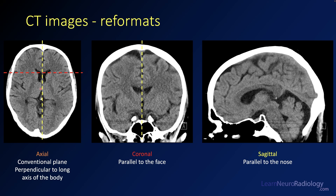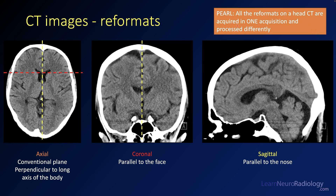The sagittal plane, shown by the yellow dashed line, is like cutting down the middle — parallel to the nose. In the sagittal image you can see the corpus callosum and the ventricles. Each plane has its relative strengths and can give you different information. On CT scanners, these are not obtained separately — they're just reconstructed from the original data acquired in one scan. All reformats on a head CT are acquired in one acquisition and processed into these different planes to help with interpretation.